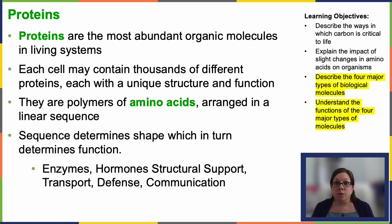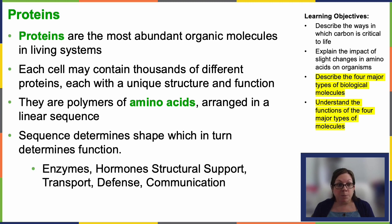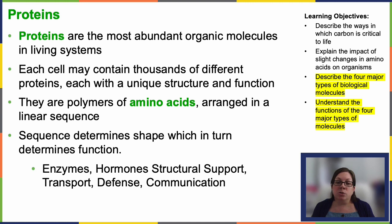Proteins are complex molecules made up of amino acids. Amino acids are the building blocks — they're the monomer, the single unit of proteins. There are 20 different types commonly found in nature, though many other amino acids exist that aren't found in living organisms. These amino acids are linked together in a specific sequence, forming a polypeptide chain. The sequence of amino acids determines a protein's unique shape, which in turn determines its function. This is incredibly important — we'll be talking about it quite a bit throughout the semester.